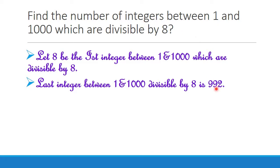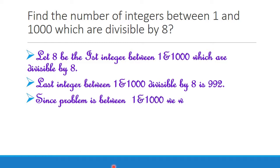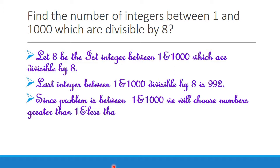So why do we choose the number 992? Because since the problem says between 1 and 1000, we choose 992 which is greater than 1 and less than 1000 only. The problem is asking for integers strictly between 1 and 1000, so we choose numbers in that range.